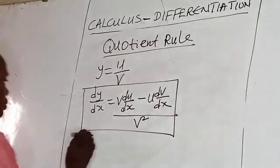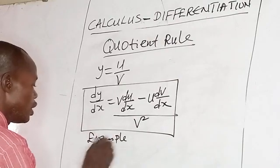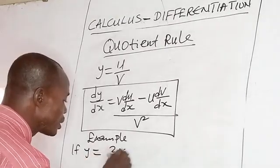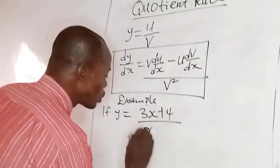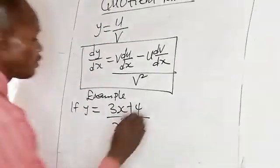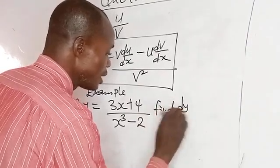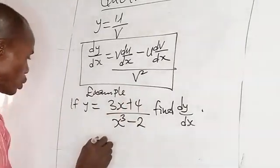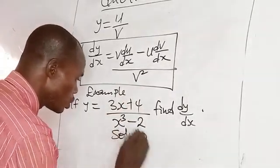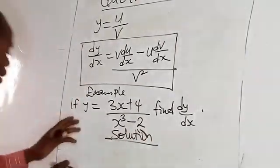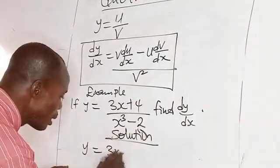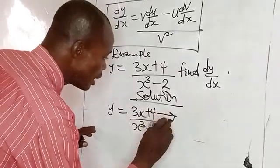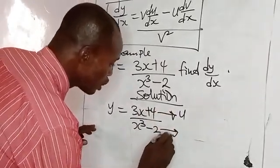Example: if y equals (3x + 4) over (x³ − 2), find dy/dx. This is a fraction, so you are expected to make use of the quotient rule. Take the numerator and let that be u, and take the denominator and let it be v.